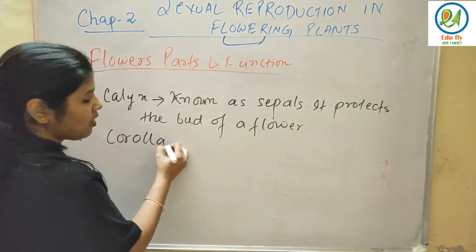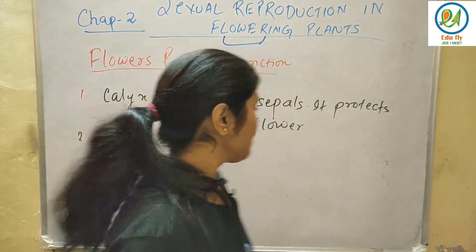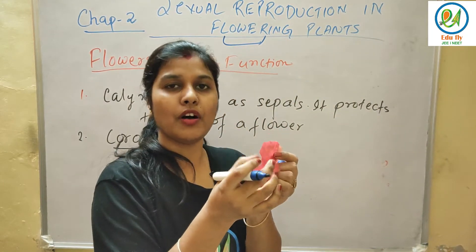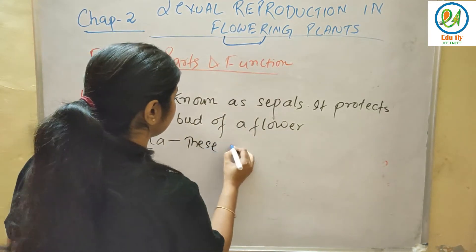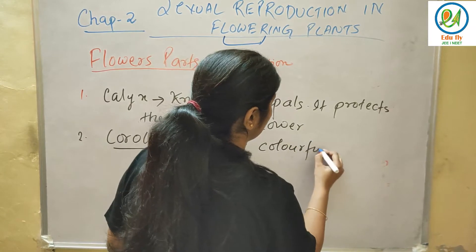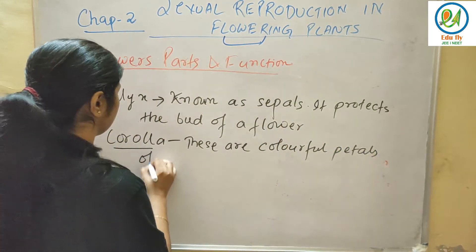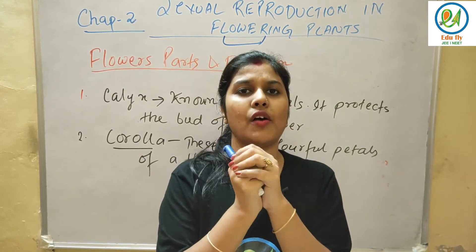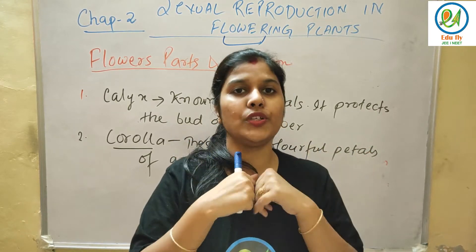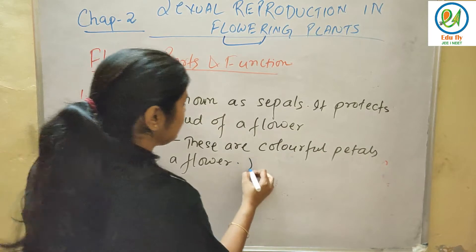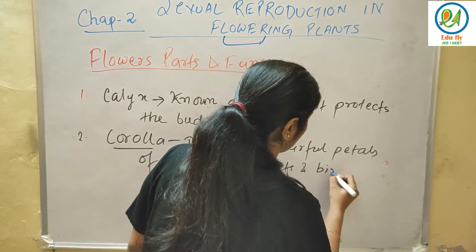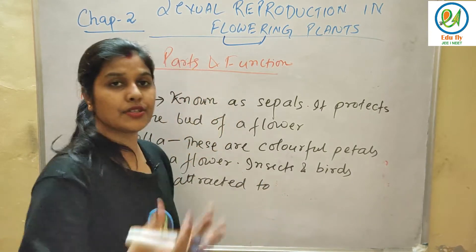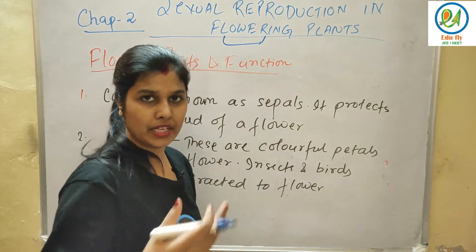Next after calyx is corolla. Corolla is the collective name for the bright and colorful petals of a flower. These petals are very bright and beautiful. They are so colorful that they attract insects and birds to the flower.